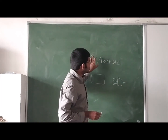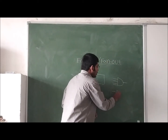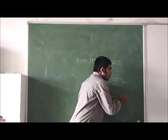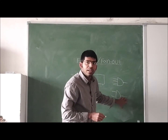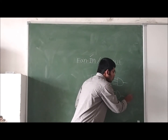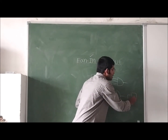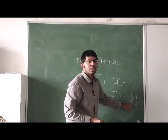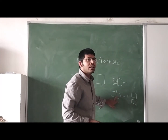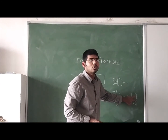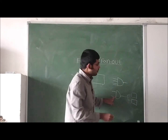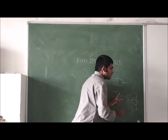Now, what is fan out? If we give two inputs to this AND gate we will get an output. This output can be connected to any number of circuits depending on the fan out concept. For example, if I can connect this output to only two digital logic circuits, then the fan out of this AND gate is two.